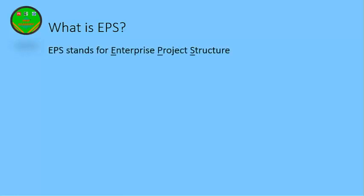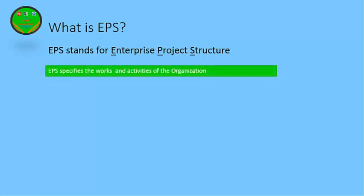Next, let's come to EPS. EPS stands for Enterprise Project Structure. EPS specifies the works and activities of the organization. In simple terms, EPS tells us what the company does. While OBS is about the responsibilities of the people working in the company, EPS is about the company's work — what the company does.